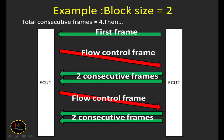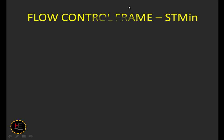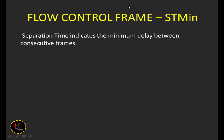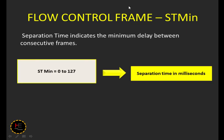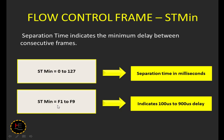The last field is separation time minimum. ST_min indicates the minimum delay between each consecutive frame. ST_min values from 0 to 127 represent time in milliseconds — for example, 0 ms, 1 ms, up to 127 ms. If the ST_min value is 0xF1 to 0xF9, it indicates 100 microseconds to 900 microseconds — F1 represents 100 µs, F2 means 200 µs, and F9 is 900 µs.